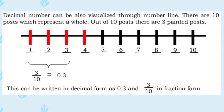Decimal numbers can also be visualized through a number line. See the illustration — there are 10 posts which represent the whole. There are 3 painted posts out of 10. This can be written as 0.3 or 3 tenths in decimal form, and 3 over 10 in fraction form.